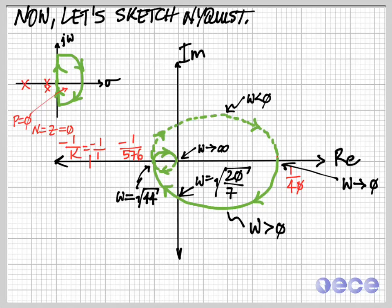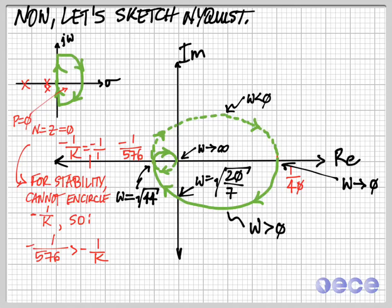If we start with K equals minus 1, then we have to make sure that we do not encircle the point minus 1, which we don't here because we encircle only minus 1 over 576. We can use those values to calculate how we will be stable. For stability, we cannot encircle minus 1 over K, if you remember that from the previous lectures. That's our stability criterion. So minus 1 over 576 has to be greater than minus 1 over K.